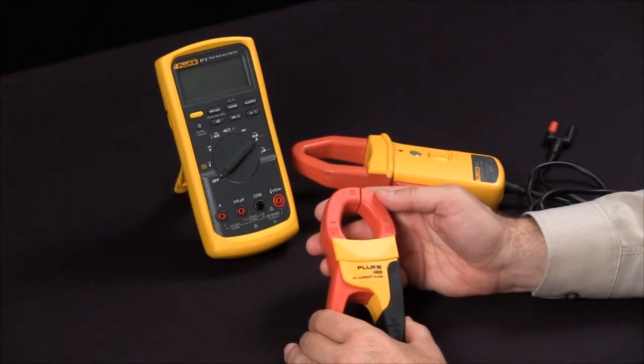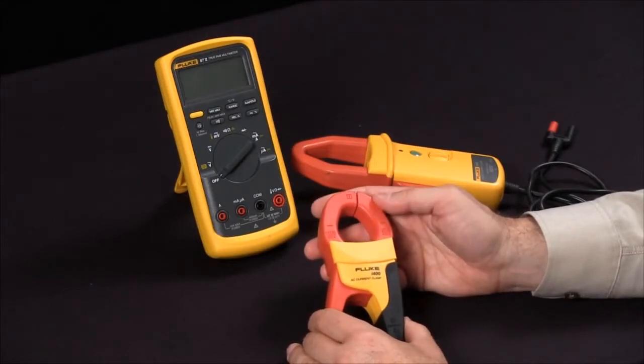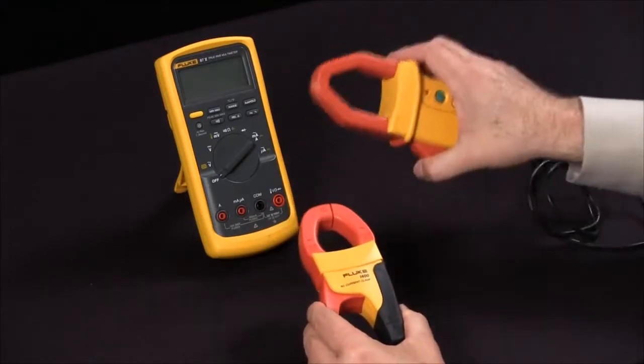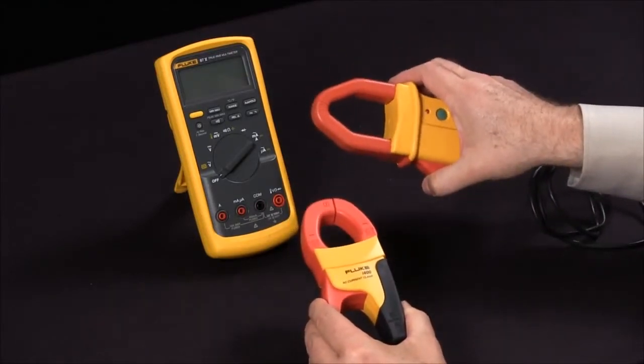Today, I'd like to discuss one of the many ways you can extend the capabilities of your Fluke digital multimeter. At Fluke, we have both AC as well as AC and DC current measuring capabilities.